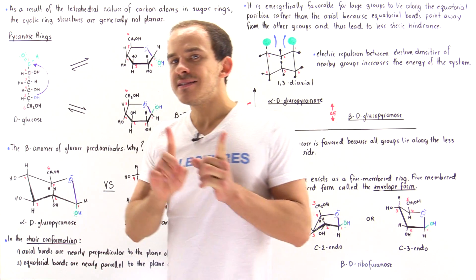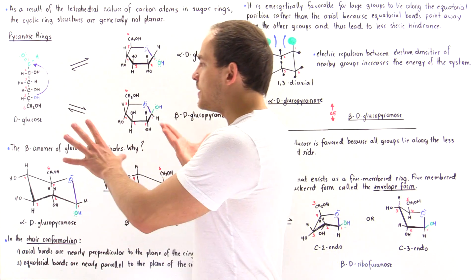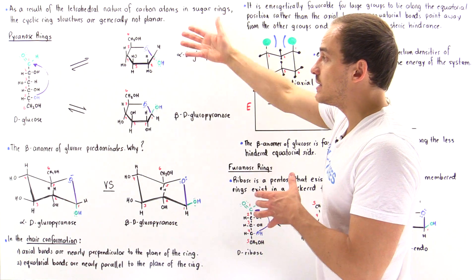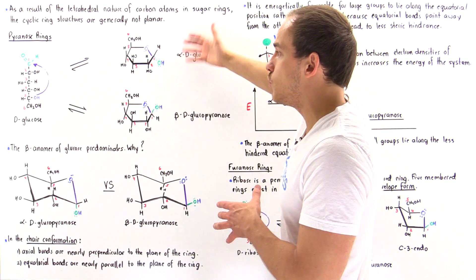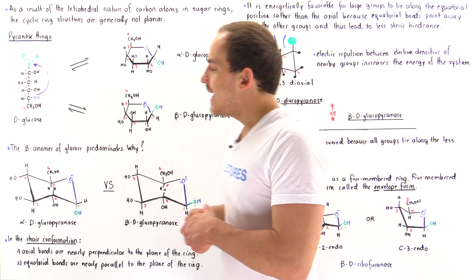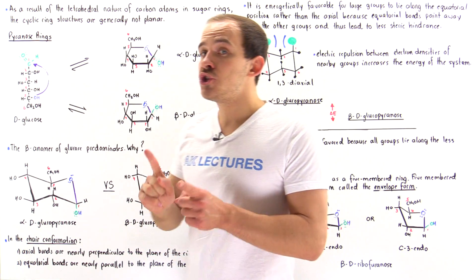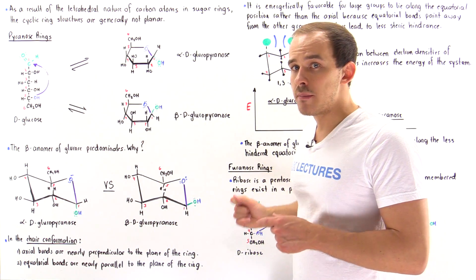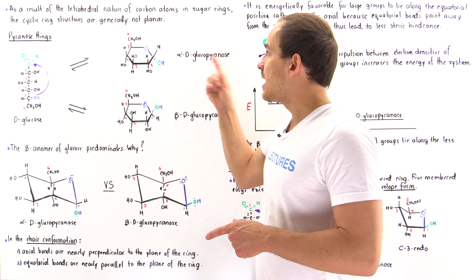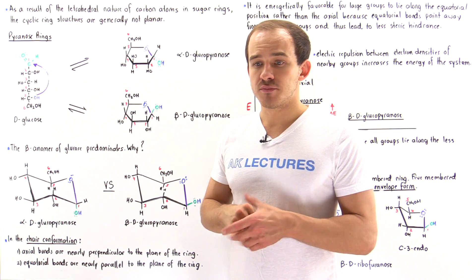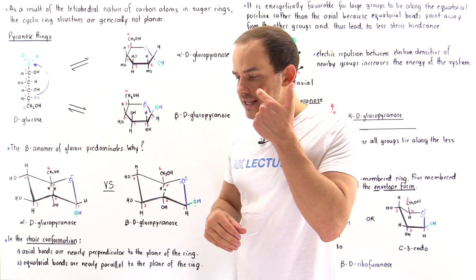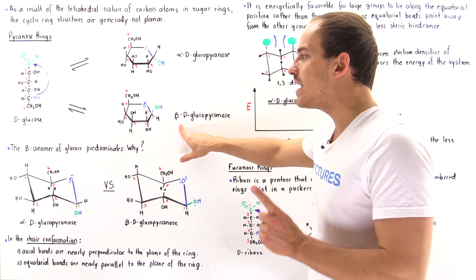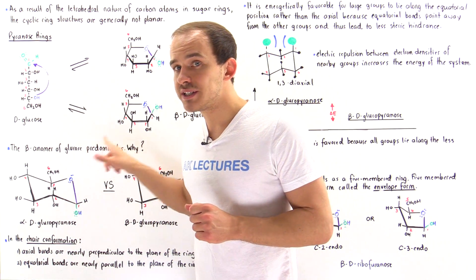Less than 1% of this mixture will exist in the open chain form, and the remaining will exist as a mixture of these two cyclic forms. It turns out that about two-thirds will exist in the beta anomer form, and one-third will exist in the alpha anomer form. So the question is: why does the beta anomer form of glucose predominate?